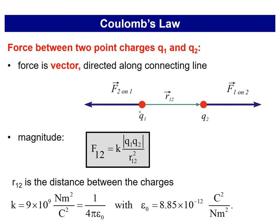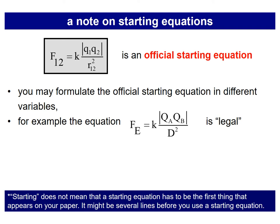The value of K is 9 × 10⁹ Newton meter squared per Coulomb squared. We can also represent K as 1 over 4π epsilon-naught, where epsilon-naught is a constant called permittivity of free space. Its value is 8.85 × 10⁻¹² Coulomb squared per Newton meter squared. This is the official starting equation which you need to memorize and can use anywhere with any variables needed.